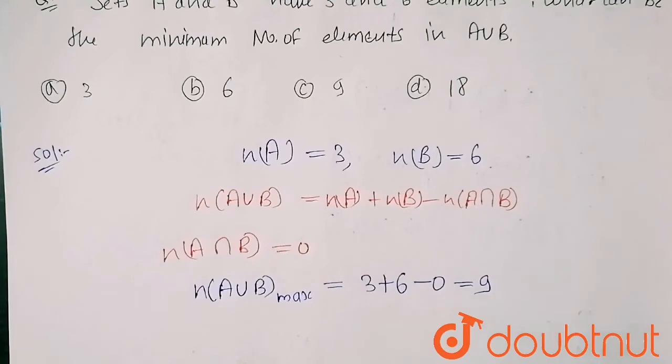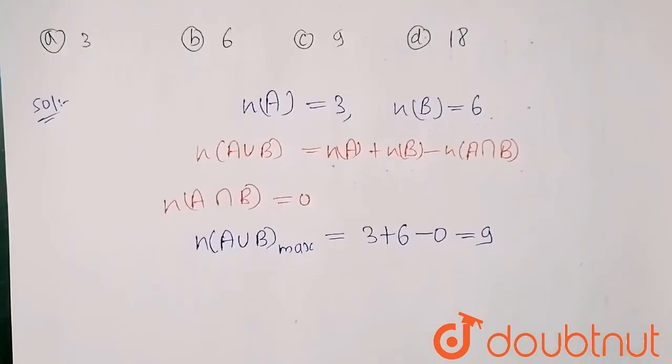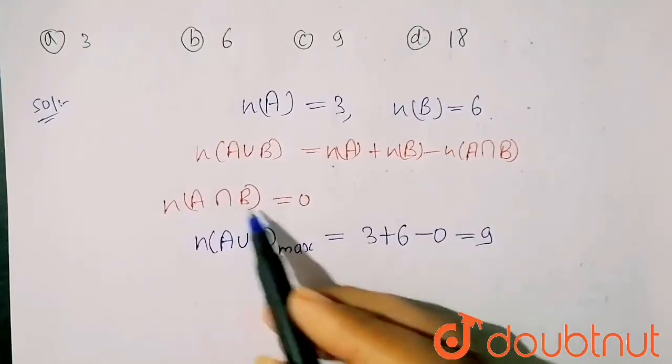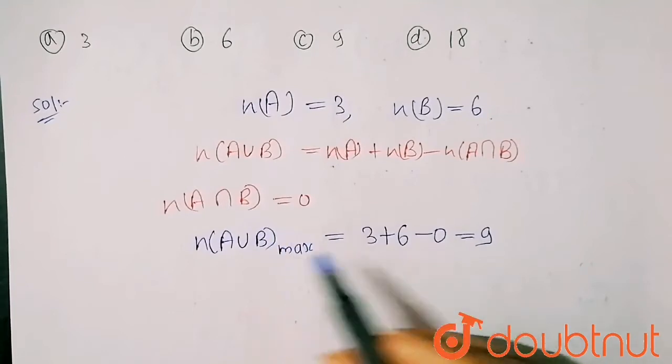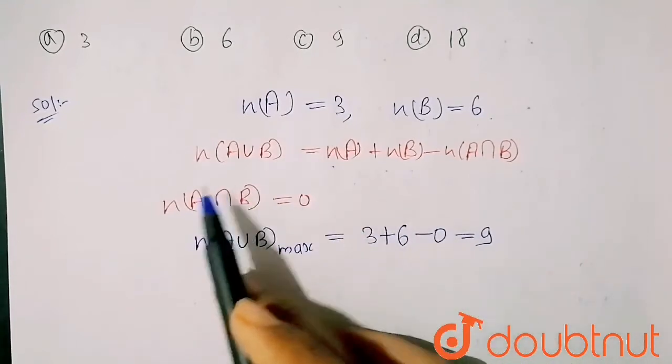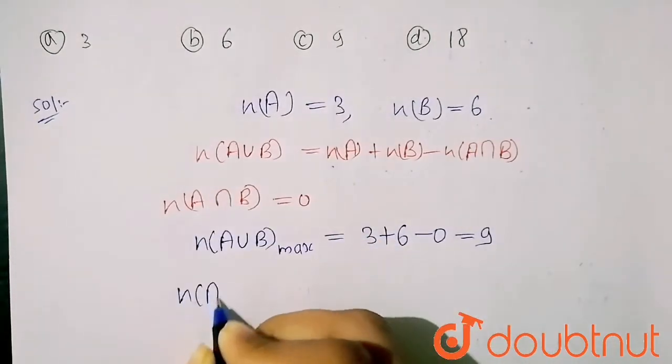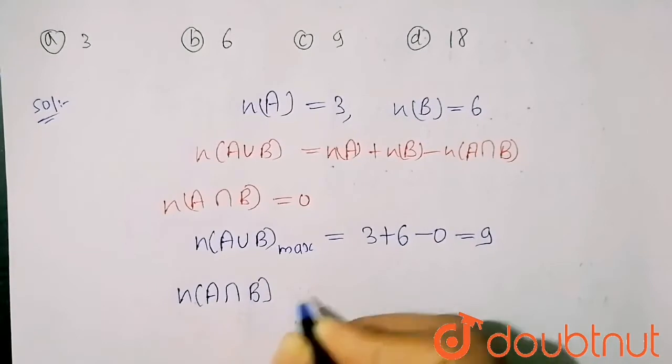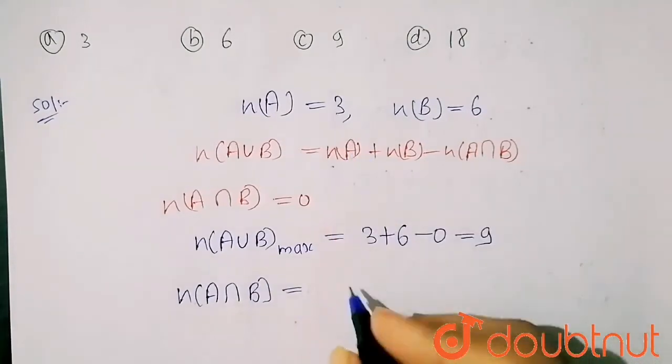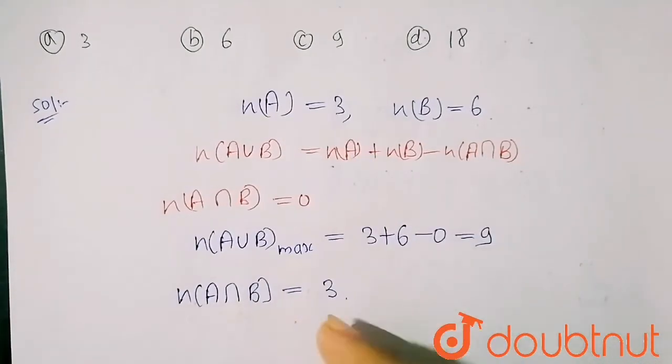Now the minimum number of elements. When my A intersection B is minimum, I got maximum elements. It means that when this part is maximum, so for maximum it will be equals to my set A, which means it will be equals to three.